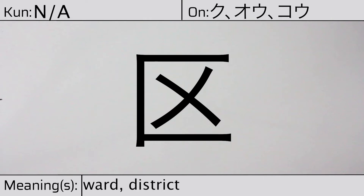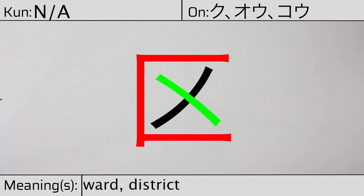It has the following radicals: hiding enclosure, dot, and katakana no.